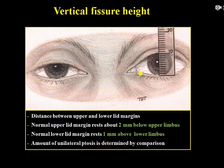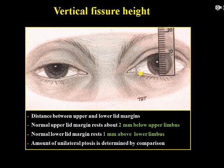Vertical fissure height, also known as palpebral fissure height (PFH), is the opening — the distance — between the upper and lower lid margins. Normally it is 8 to 10 mm, but in cases of ptosis it will be reduced depending upon the severity. Always compare measurements in both eyes.